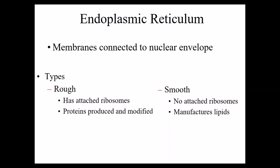The endoplasmic reticulum is a series of membranes directly connected to the nucleus through the nuclear envelope. There are two types of endoplasmic reticulum depending on whether or not they have ribosomes. If the endoplasmic reticulum is associated with ribosomes — if the ribosomes are attached there — it's referred to as rough, because it gives the endoplasmic reticulum a rough appearance. If it has ribosomes, it produces proteins as its main function and helps to fold or modify the proteins. Smooth endoplasmic reticulum doesn't have any ribosomes, so it's not manufacturing proteins, but it does manufacture lipids.